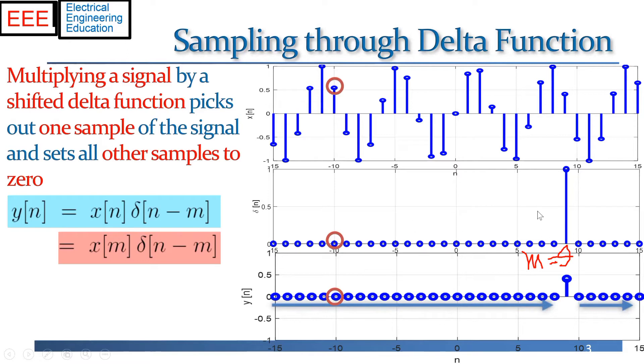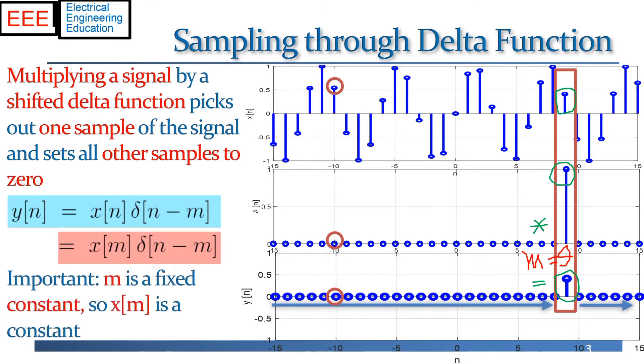And for all values of the signal, we're going to get zero values here in the product. The only place where we're going to have a non-zero value is precisely at the index nine, where we'll take the product of the time signal x at time point nine, multiplied by one. And we will have in this signal a signal that is all zero, except at the time point nine, it is going to jump up to the value x at time point nine.